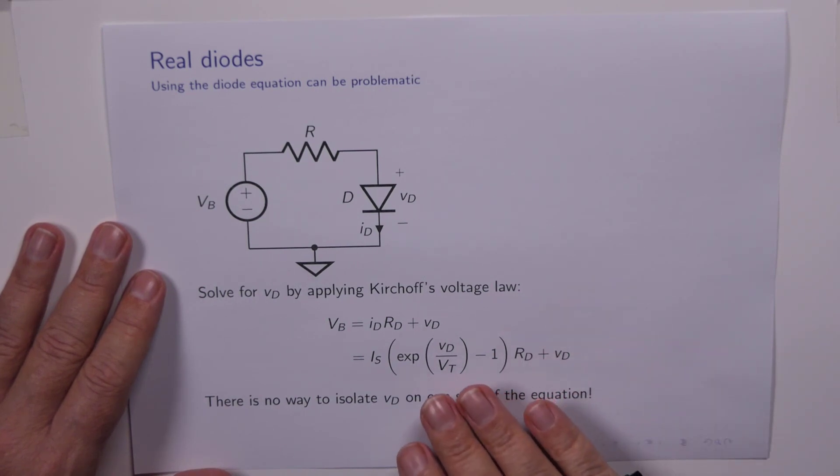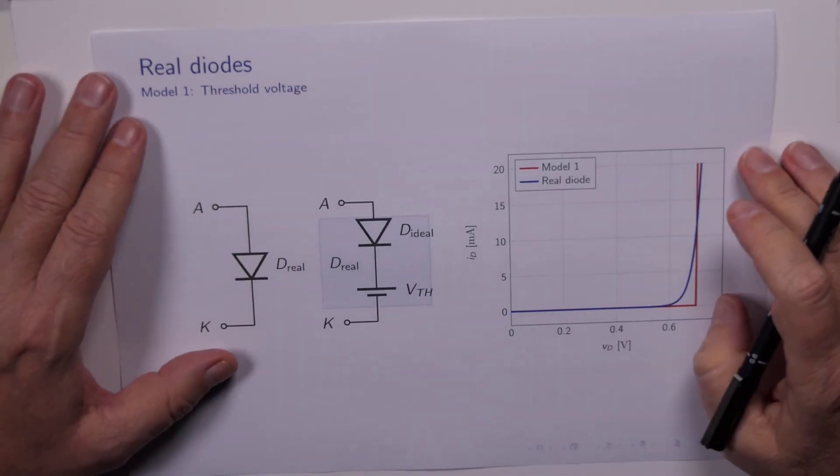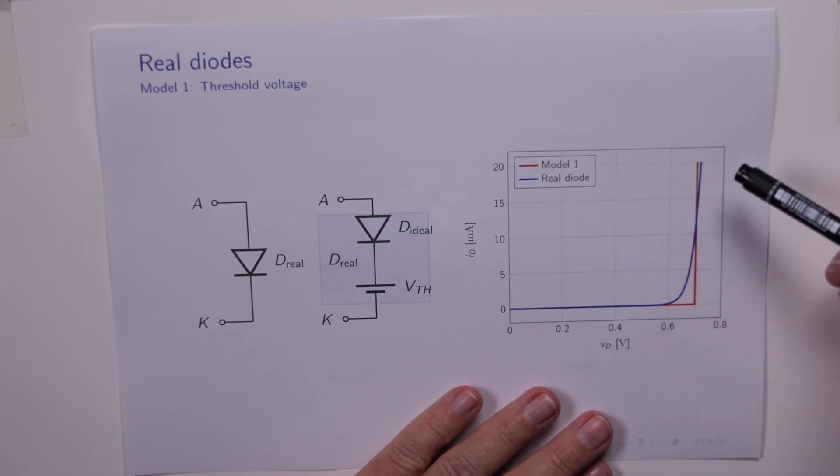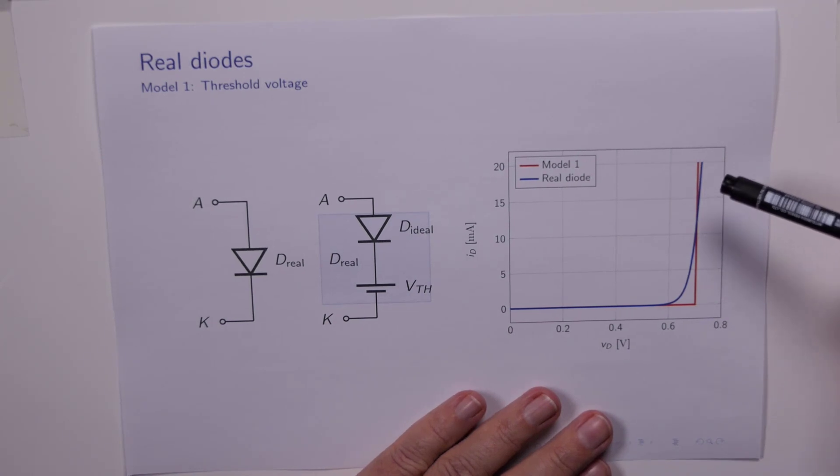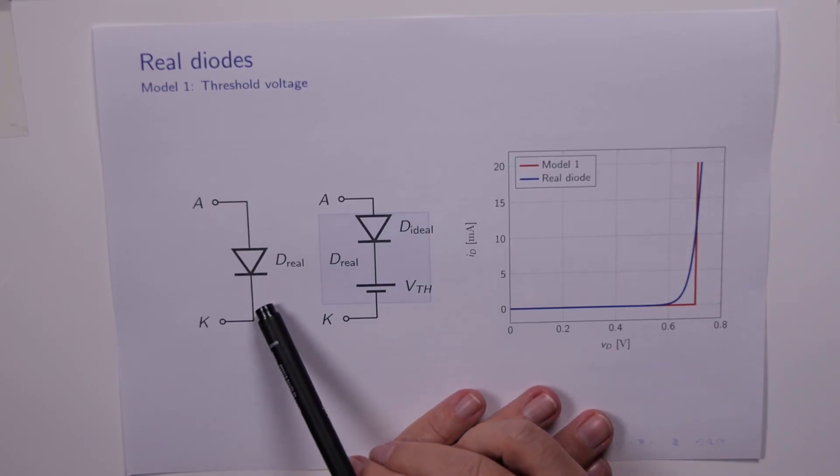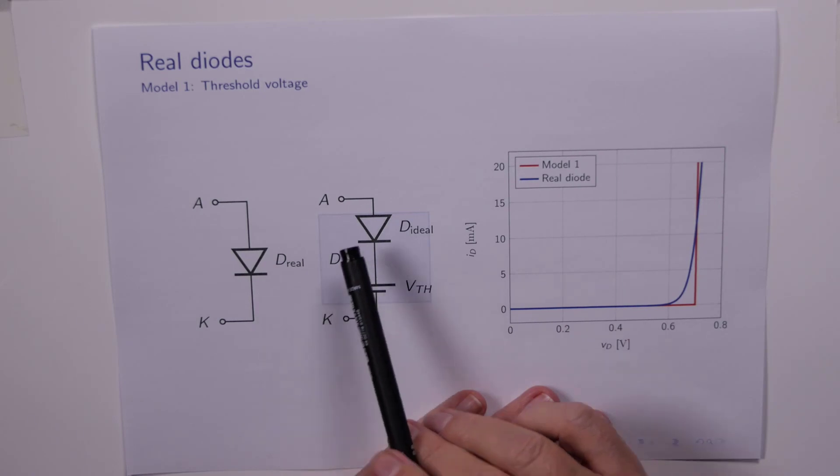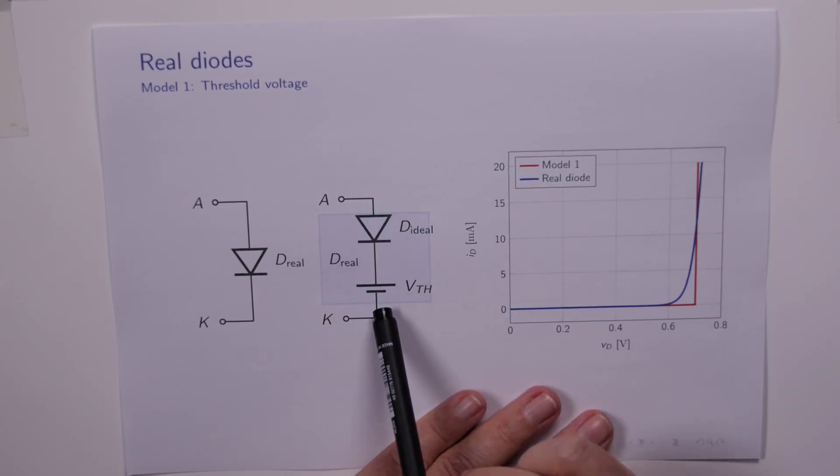So when we had a look at the forward characteristic for the diode, there were a couple of things that stood out. One was that the voltage across the diode was not zero when it was conducting. And indeed it took about 0.7 of a volt in order to do that. So that would seem to be the largest issue we could address initially. And this is how we do it. Here on the left, we've got our real diode. And on the right, here's a simple model. We replace the real diode with an ideal diode in series with the threshold voltage.